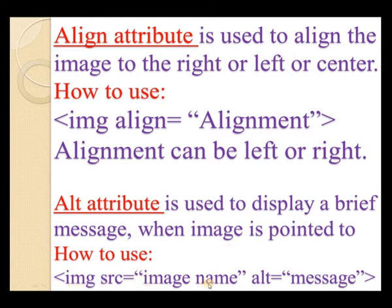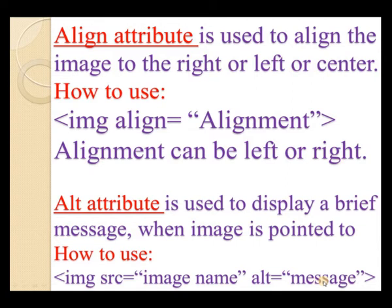The syntax for using the alt attribute is: img src equal to image name, alt equal to message. For example: img src equal to principal.jpg, alt equal to 'Mr. Surendra Yadav'. So when we move the mouse pointer over the photo, the message 'Mr. Surendra Yadav' will be displayed.